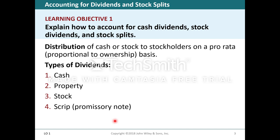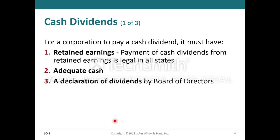Learning objective one: explain how to account for cash dividends, stock dividends, and stock splits. Dividends are a distribution of cash or stock to stockholders on a pro rata, proportional to ownership, basis. Types of dividends include cash, property, stock, and script, which is a promissory note. For a corporation to pay a cash dividend, it must have retained earnings, adequate cash, and a declaration of dividends by the board of directors.